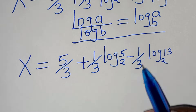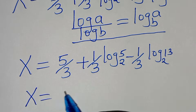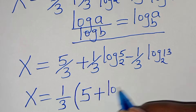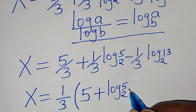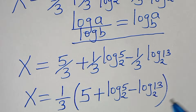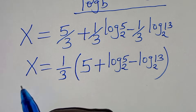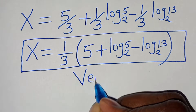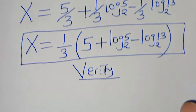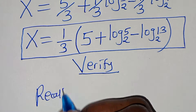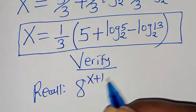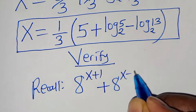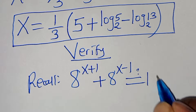Since 1/3 is common, we factor it out: x = (1/3)(5 + log_2(5) − log_2(13)). This is the value of x. The next step is to verify that this value satisfies the original equation 8^(x+1) + 8^(x-1) = 100.